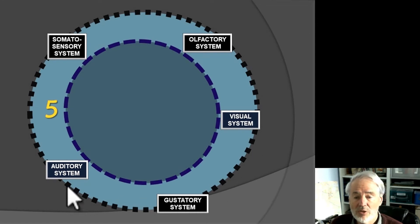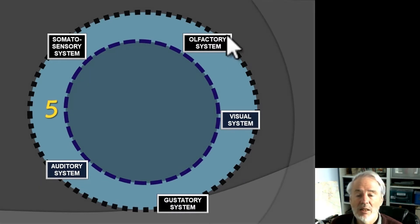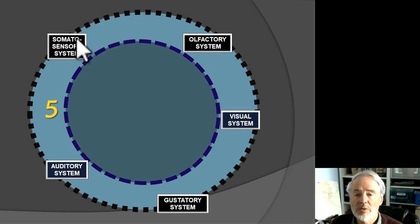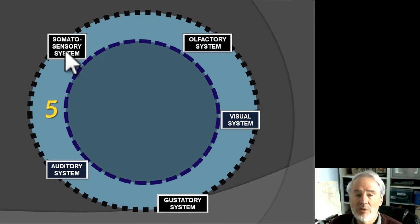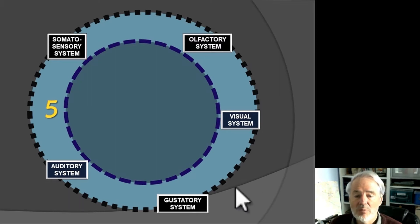At least four of the outer systems have traditional names: auditory (hearing), taste, seeing, and smelling. Where you might expect touch, touch is just one part of the complex sense we now call the somatosensory sense. I'm going to use the word 'bodily' to cover this — not a perfect term, but I'll talk about bodily sensations. All of these have parallels in the physical brain.